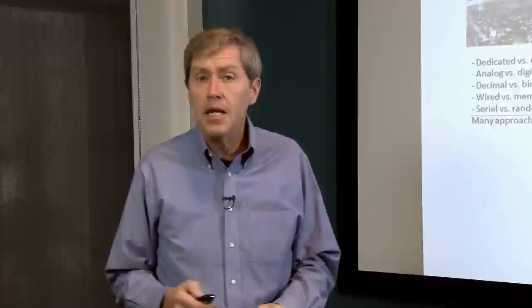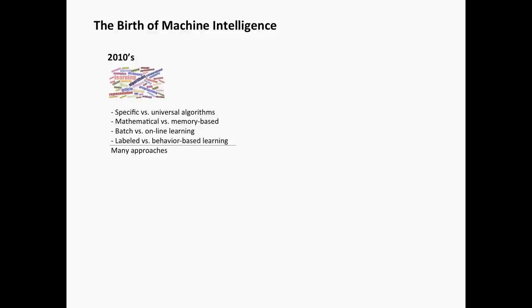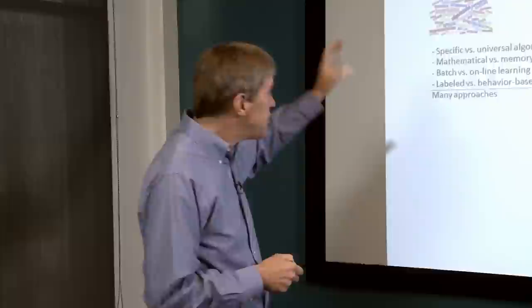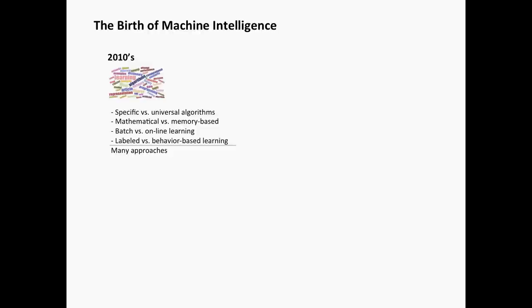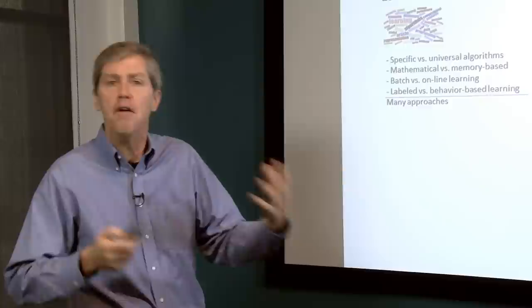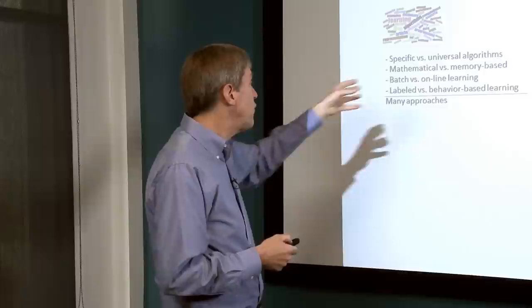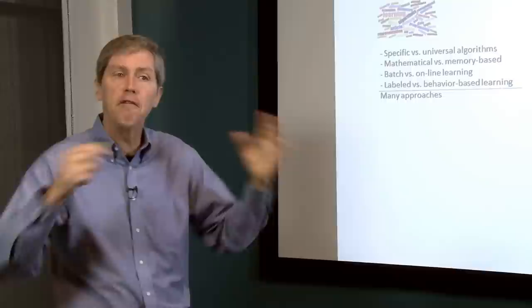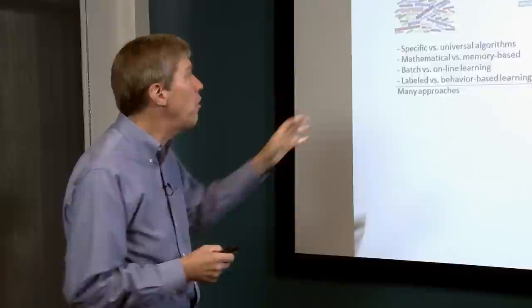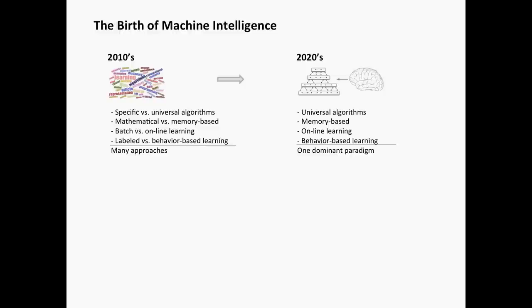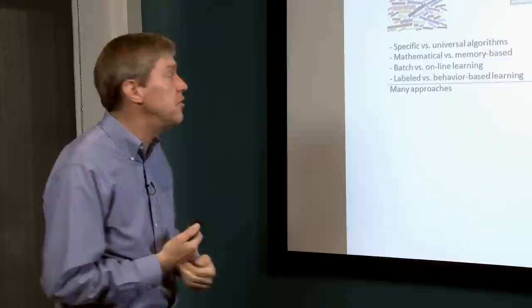Today in the 2010s we're in a very similar period. We are witnessing the birth of machine intelligence right now, and it's a confusing time just like the 1940s. There are different ideas about how this will play out — some people work on specific solutions, others on more universal ones. There are mathematical approaches, memory-based learning approaches, batch versus online learning, labeled versus behavioral-based learning. We'll settle on a dominant paradigm, and part of this talk argues for what that paradigm is — based on what the brain gives us as an example.